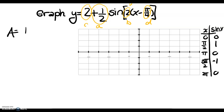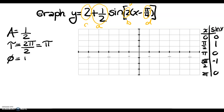a is a positive 1 half, so its absolute value is a positive 1 half. When I calculate the period, I get 2 pi over b, and b is 2, so I get pi for my period. My phase shift is a positive pi over 4, so we'll be shifting our graph to the right. And then I see a nice vertical shift of 2.